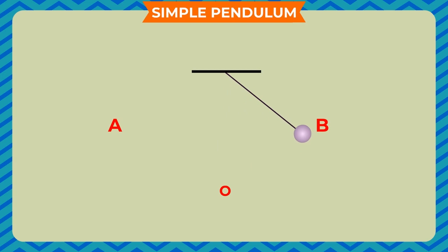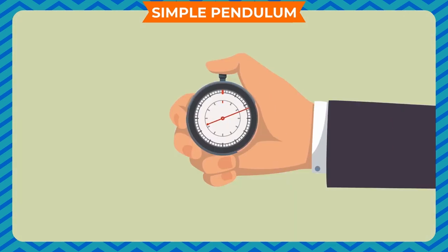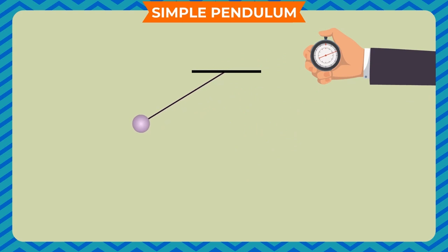The time taken by pendulum to complete one oscillation is called the time period. To measure the time period of the pendulum, we need a stopwatch. To set the pendulum in motion, gently hold the bob and move it slightly to one side, making it sure that the string attached to the bob is tight while you displace it. Now, release the bob from the displaced position.